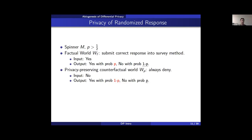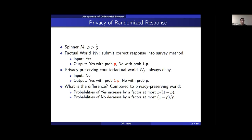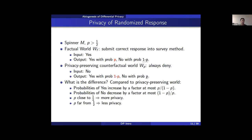If the respondent feeds yes into the spinner, the output is yes with probability P. If the respondent feeds no, the output is yes with probability 1 minus P. So if the respondent decides to be factual instead of lying, the probability of a yes goes from 1 minus P to P — a change by a factor of P over 1 minus P — and the probability of no changes by a factor of 1 minus P over P. As P gets closer to one-half, these factors approach 1, meaning the probabilities are almost unchanged no matter what the respondent said.